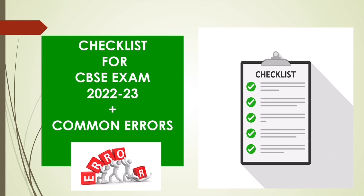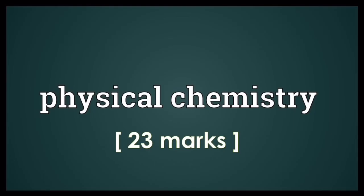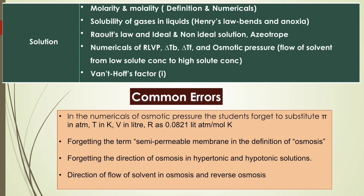Now let us go for chapter-wise discussion of important areas and common errors. Starting with physical chemistry, the first chapter is Solutions. A common error in the numericals of osmotic pressure is that students often forget to use proper units. The osmotic pressure (π) should be in atmospheres, temperature in Kelvin, volume in liters, and R should be taken as 0.0821 L·atm·mol⁻¹·K⁻¹. Please ensure the given values are converted into these respective units.